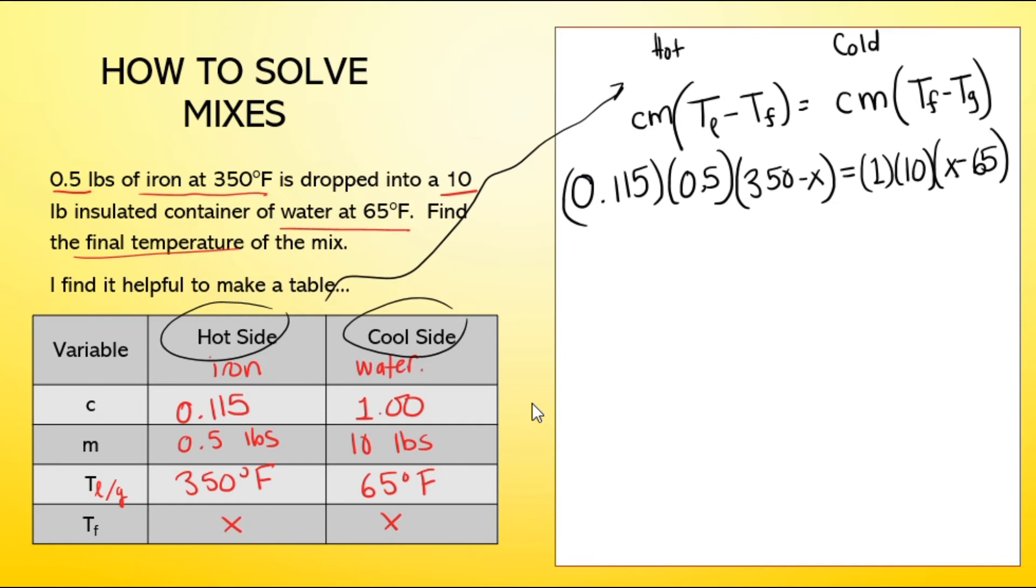Before we algebra, let's make it so we only have one number in front. I'm going to take 0.115 and multiply it by 0.5, and that's going to give me 0.0575. On the other side, I'm going to go 1 times 10, so that just makes 10X minus 65. If you have a number in front of brackets, it means there's multiplication. But if there's two things in the brackets, the number in front has to multiply by both of them.